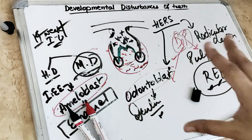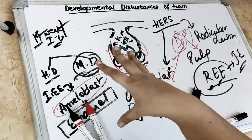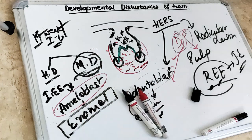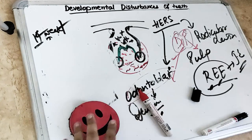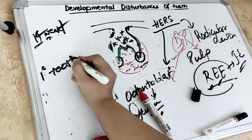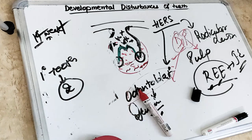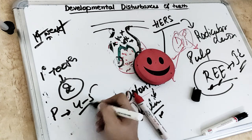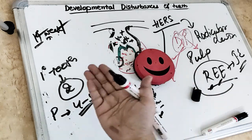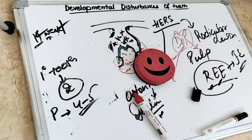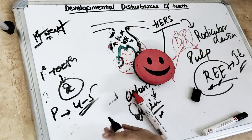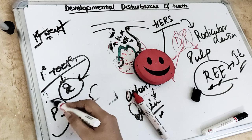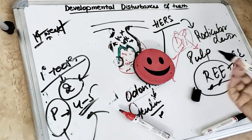Calcification starts at the cusp tip or incisal edges — the main center from where calcification begins — and proceeds cervically. The maturation process is long: for a primary tooth crown it takes two years to complete; for a permanent tooth crown it takes four to five years to complete — even longer than root formation. So primary teeth take two years to get calcified; permanent teeth take four to five years.